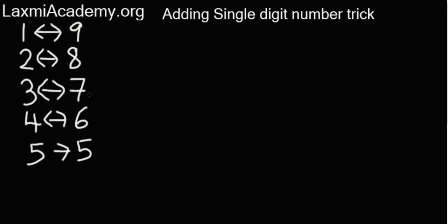Let's take a simple example, 3 and 7. When you see 3 and 7 it will just come to your mind that 3 and 7 are complements. It will give you 10.